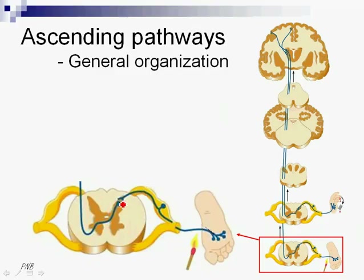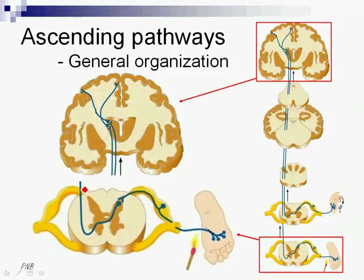Then this second neuron will be the one that changes side — there will be a decussation. It will change side and continue ascending up to the thalamus, where it will synapse with the third neurons, which will finally remit themselves to the final destination. Here we can see the cortex.